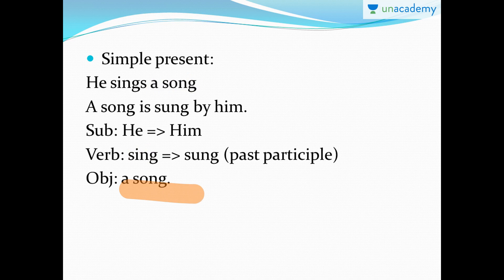You'll have to know where the subject is, where the verb is, and how to place them. Tenses play a very important role — we cannot put 'he sings a song' in passive voice as 'a song was sang by him.' That is absolutely incorrect. You'll have to respect the rules, because without rules your grammar is absolutely incorrect. When it's simple present tense, you take 'is', 'are', or 'am' plus the past participle form of the verb.